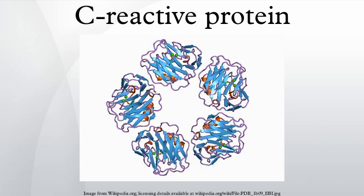The CRP gene is located on the first chromosome. It is a member of the small pentraxin family. It has 224 amino acids, has a monomer molecular mass of 25,106 daltons, and has an annular pentameric discoid shape. CRP binds to the phosphocholine expressed on the surface of dead or dying cells and some bacteria. This activates the complement system, promoting phagocytosis by macrophages, which clears necrotic and apoptotic cells and bacteria.